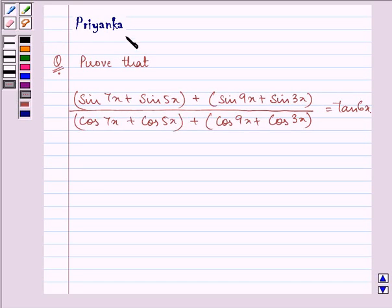Hi and welcome to the session. I am Priyanka and let us discuss the following question. Prove that sin 7x plus sin 5x plus sin 9x plus sin 3x divided by cos 7x plus cos 5x plus cos 9x plus cos 3x is equal to tan 6x.